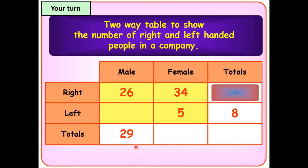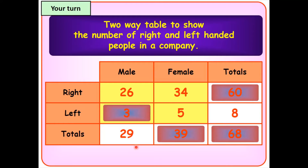Same job again — pause the video and have a go. There are your four answers: 26 add 34 gives 60 in total; 8 take away 5 gives 3 left-handed males; 34 add 5 gives a total of 39 females working at this company. And then the overall total is either 29 add 39, or vertically 60 add 8, giving 68.